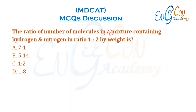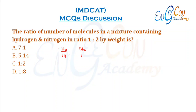The ratio of number of molecules in a mixture containing hydrogen and nitrogen in a ratio of 1:2 by weight. With equal masses, the normal ratio is 1. Here, molar mass of N2 is 28 and H2 is 2, giving a normal ratio of 1:14. If we double the weight of nitrogen, we get 14:2 or 7:1. So A is the correct option.